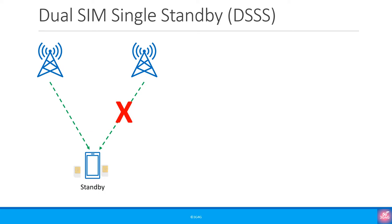Let's start by looking at dual SIM single standby, or DSSS. Back in the old days, dual SIM phones allowed only one SIM on standby at any one time; the other SIM was switched off. There were two main reasons for this: the phone had a single transceiver, which kept the cost down and power consumption down as well. So one SIM had to be switched off while the other was on standby to go active whenever needed.